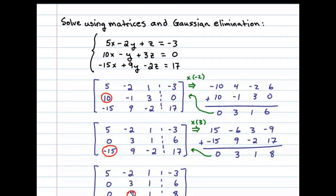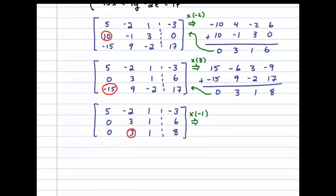To do that it looks like we can multiply the second row by -1. That'll result in 0, -3, -1, and -6. Under that we'll write the third row: 0, 3, 1, and 8. Now adding these together we're left with 0, 0, 0, 2, and we'll replace the third row with that.